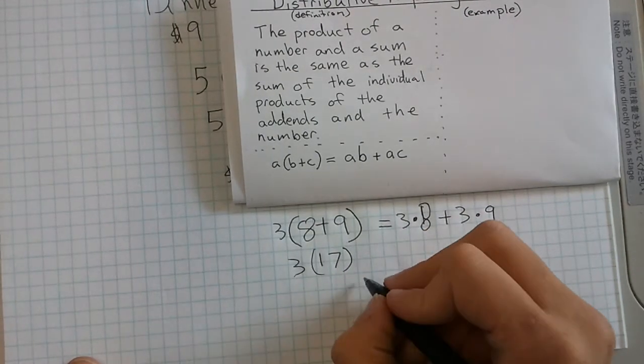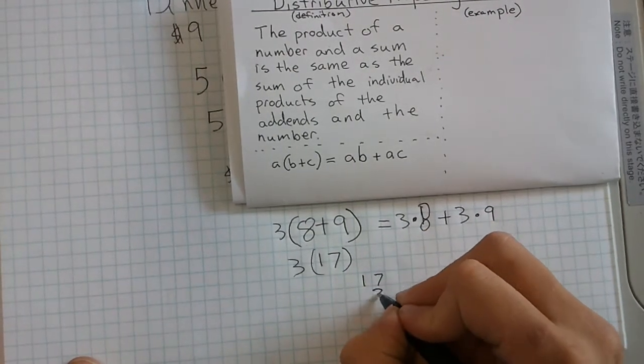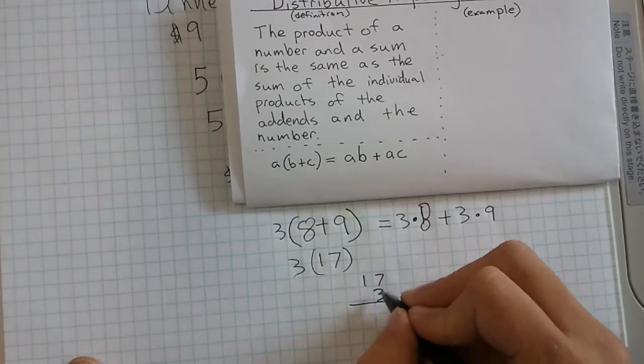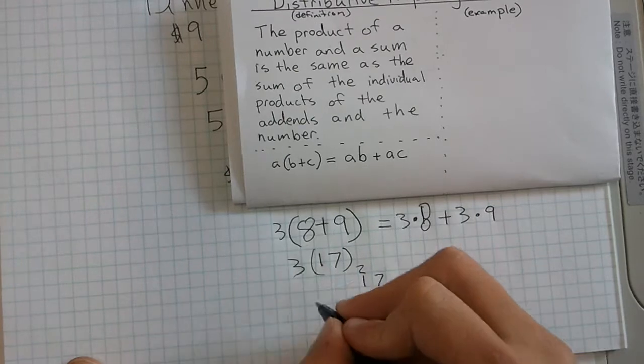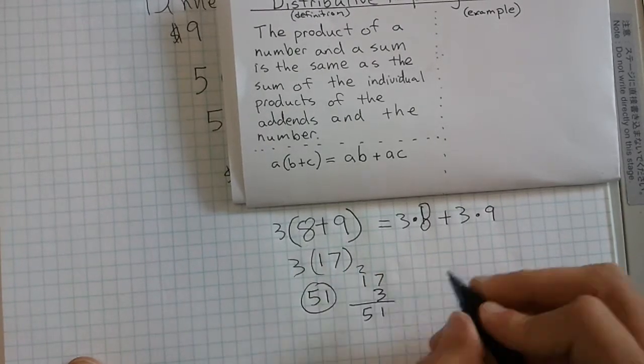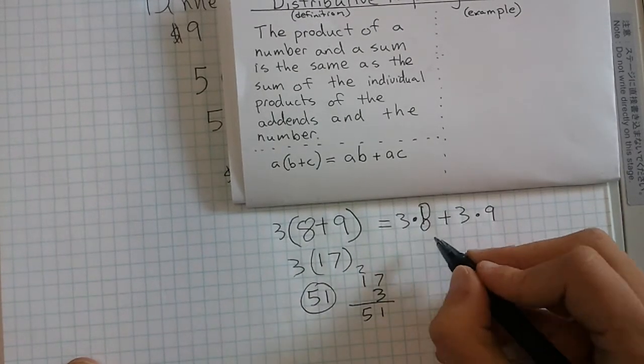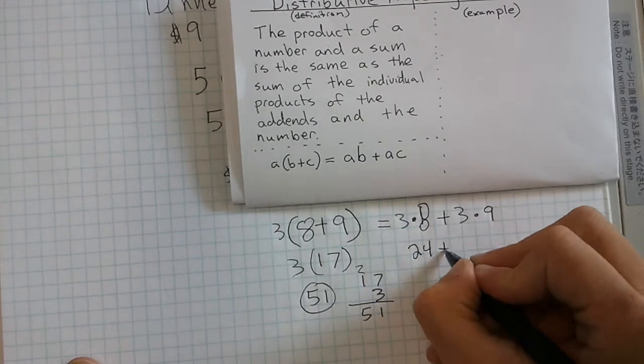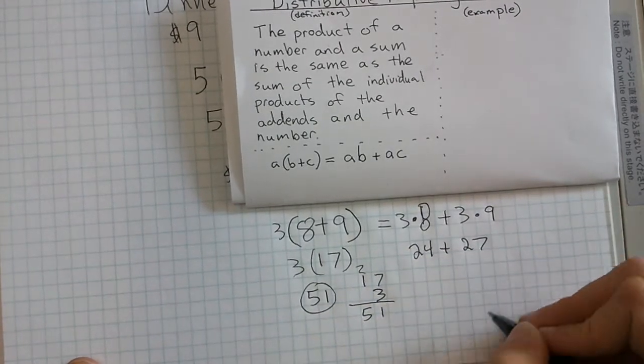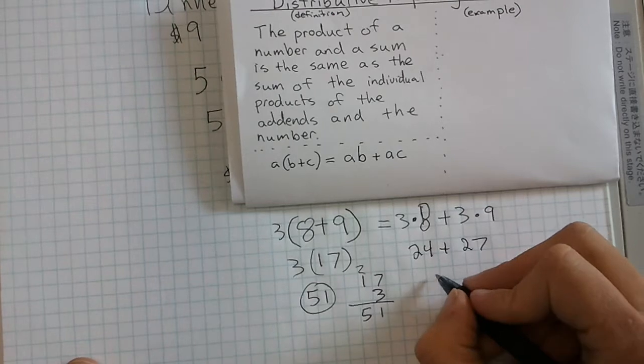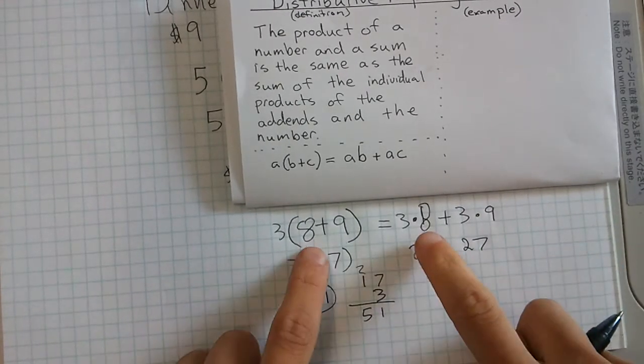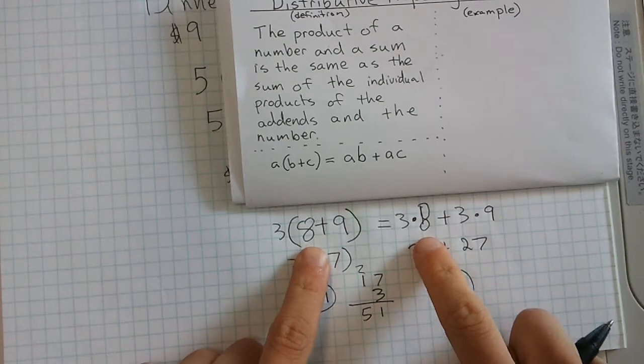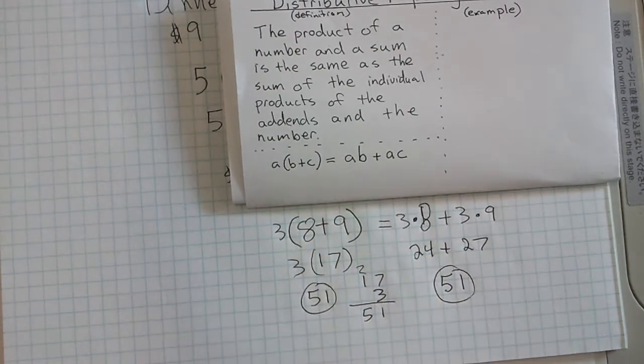Parentheses first, then I would multiply. 3 times 17 is 51. Over here same thing: 3 times 8 is 24 plus 27, and that will add together and equal 51, proving that the distributive property is correct.